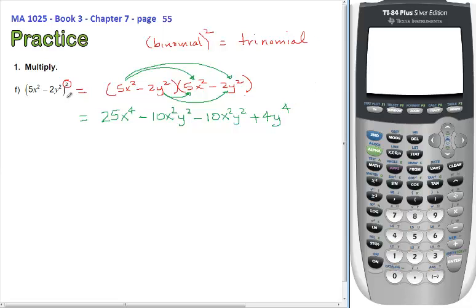Now, when you expand a binomial squared, the two inside ones will be exactly the same, and you can combine them. And you will get 25x to the 4 unchanged. Just carry it down. Combine the two like terms to get minus 10 minus 10 is minus 20, x², y².